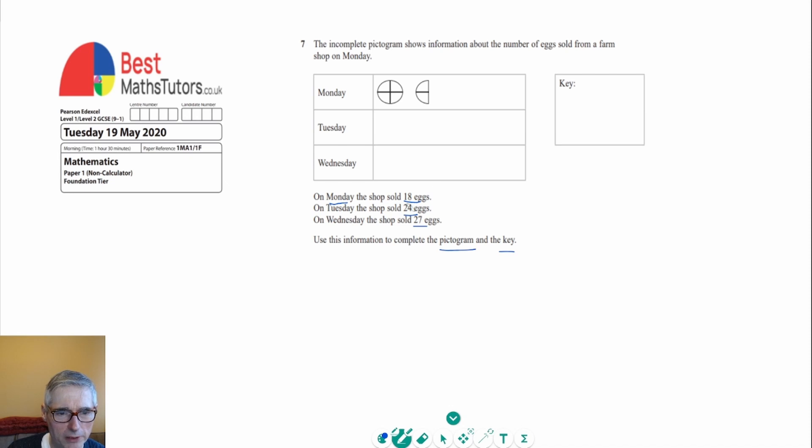So we can use this information about Monday being 18. We know this information here is equal to 18, and so we need to decide what the value of one of these circles is with the crosses in it. We can see that we've got one, two, three, four, five, six quarter circles there.